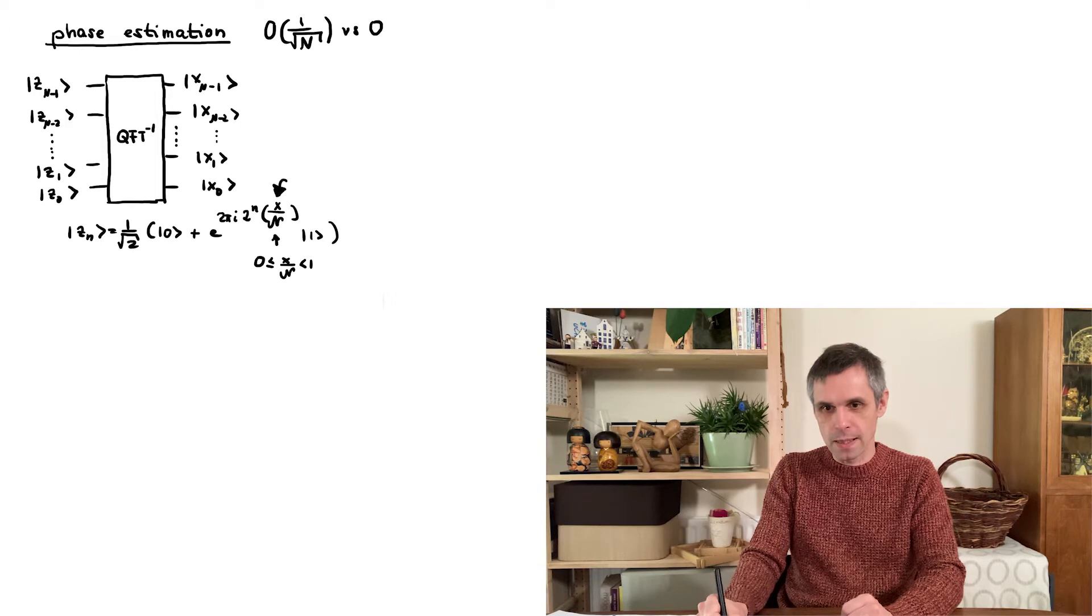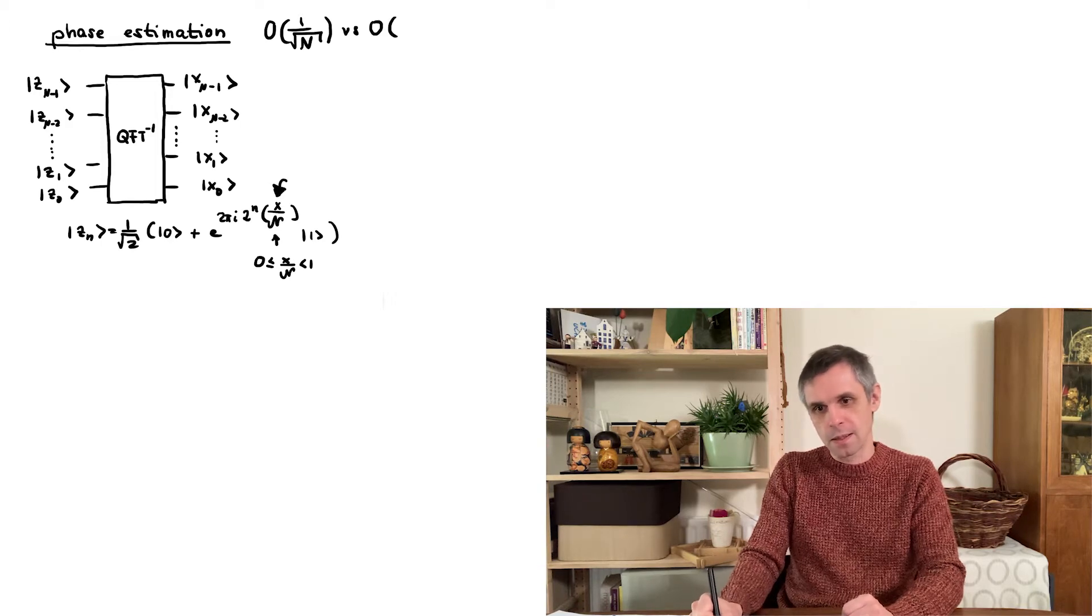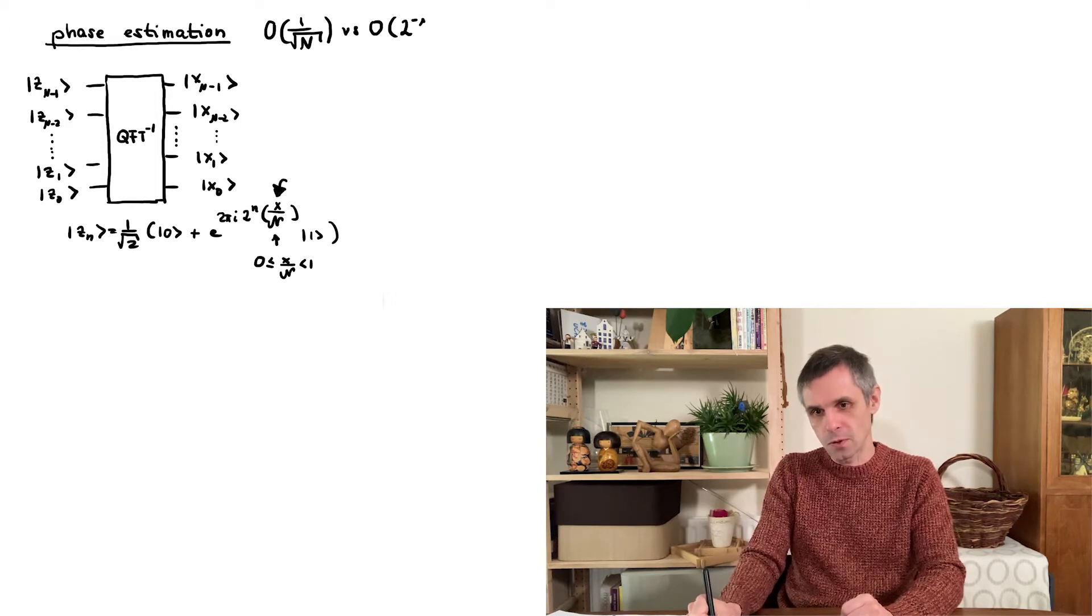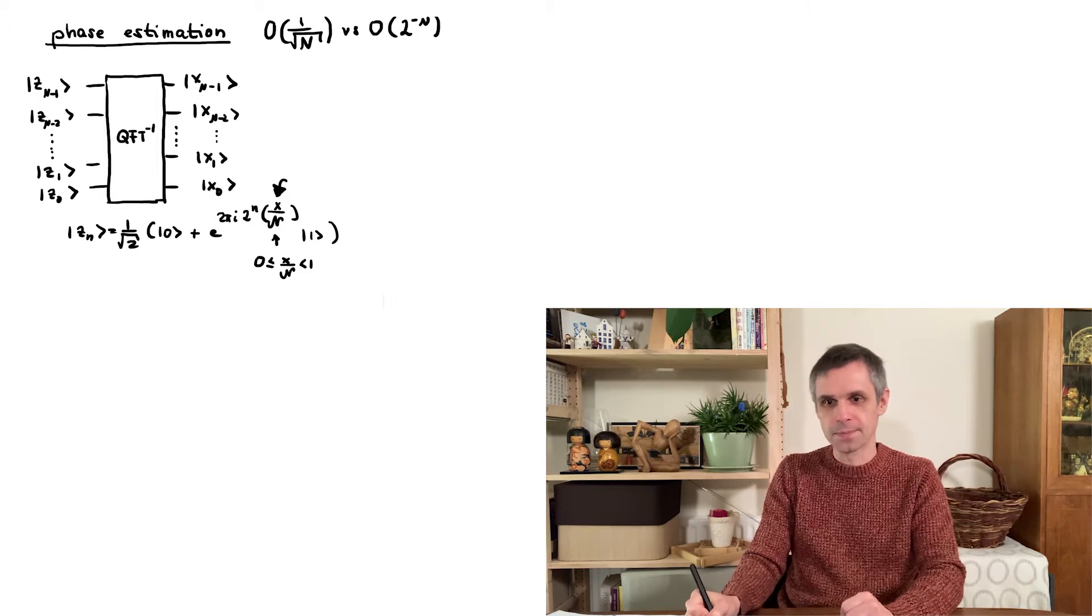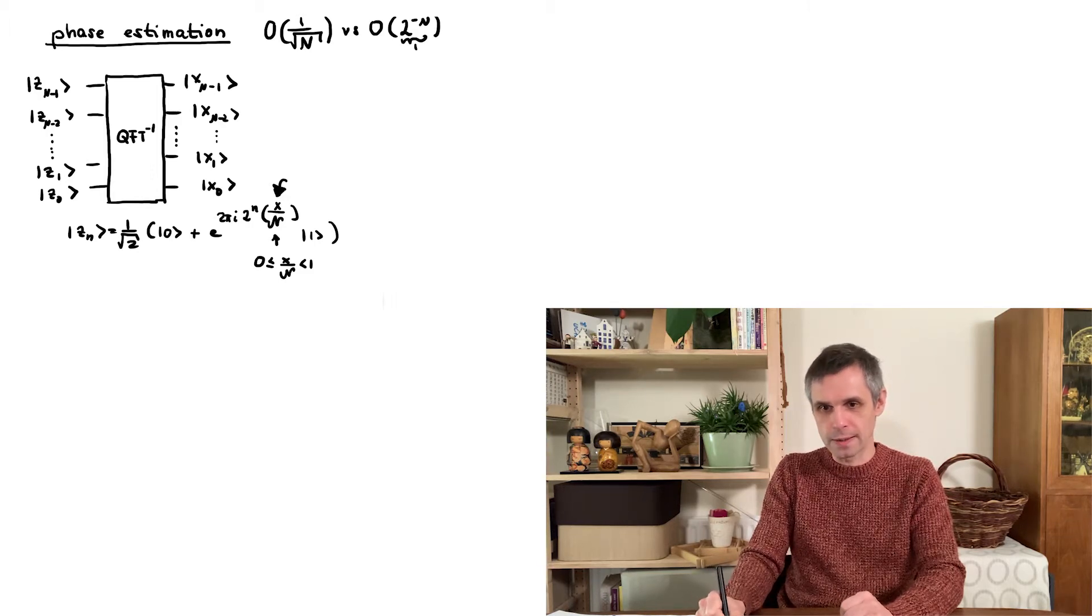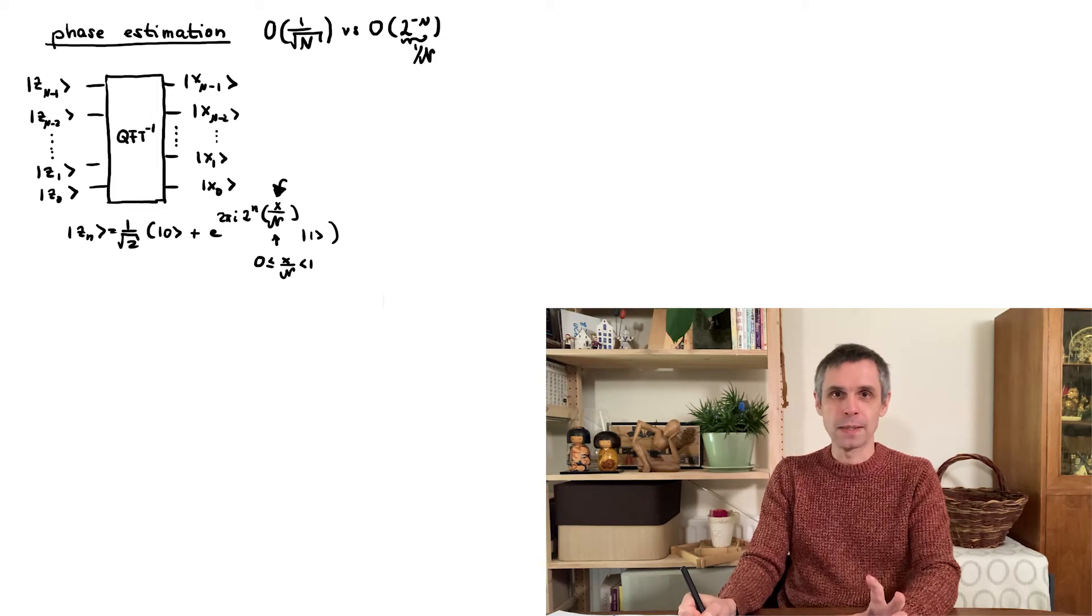Here we have n quantum bits and therefore we also do n measurements. But our outcome is an n bit binary number. And therefore our precision will be of the order of two to the minus n or one over curly n. So this is again exponentially better.